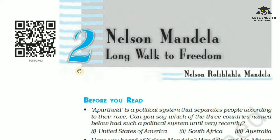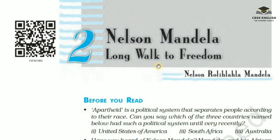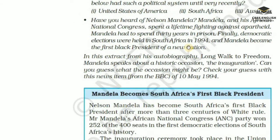Page number 16, lesson two: Nelson Mandela — Long Walk to Freedom, written by Nelson Rolihlahla Mandela. Before you read: Apartheid is a political system that separates people according to their race. Can you say which of the three countries named here had such a political system until very recently? They are North America, South Africa, or Australia. Have you heard of Nelson Mandela? Mandela and his African National Congress spent a lifetime fighting against apartheid.